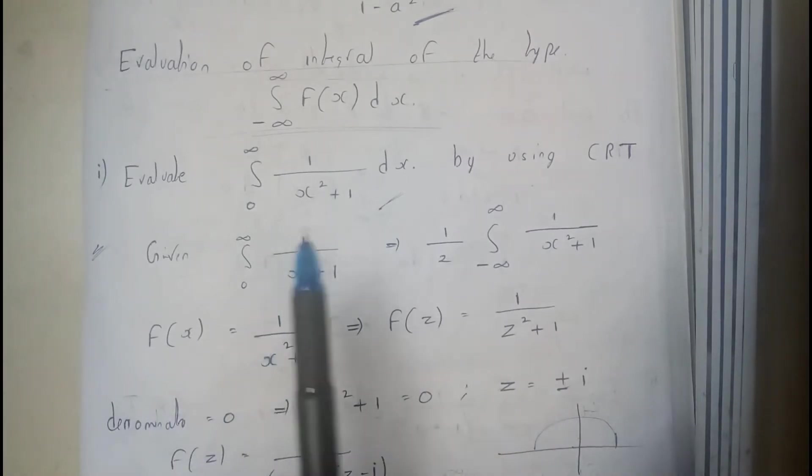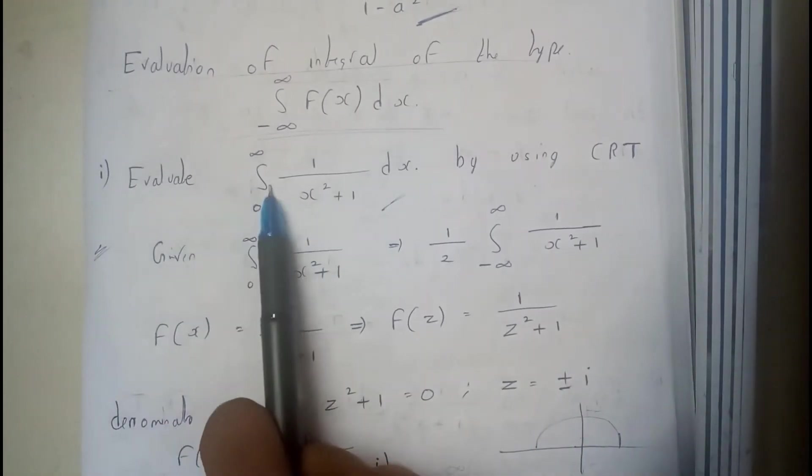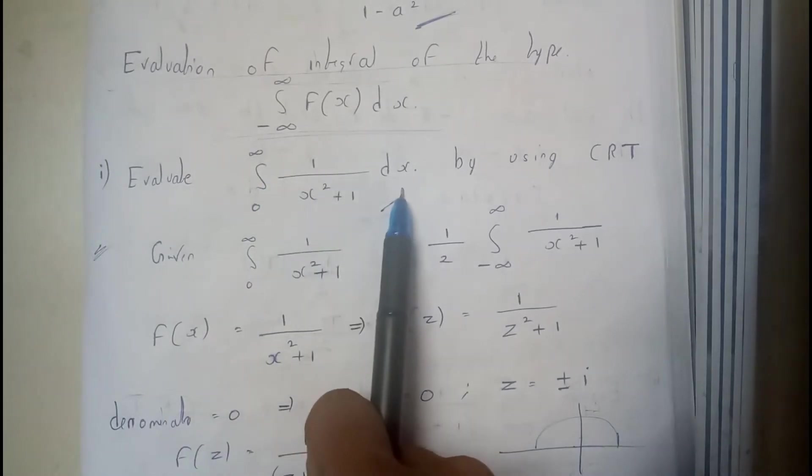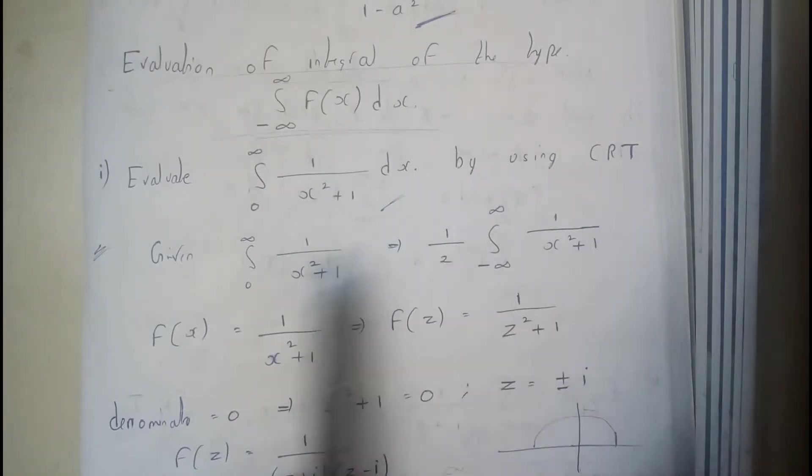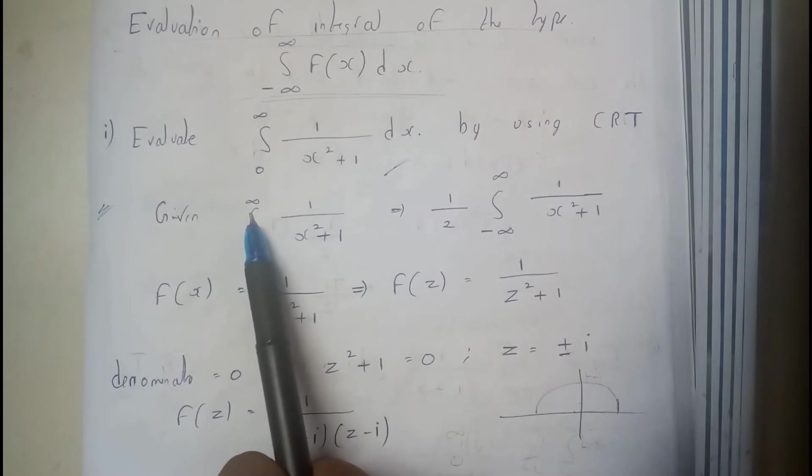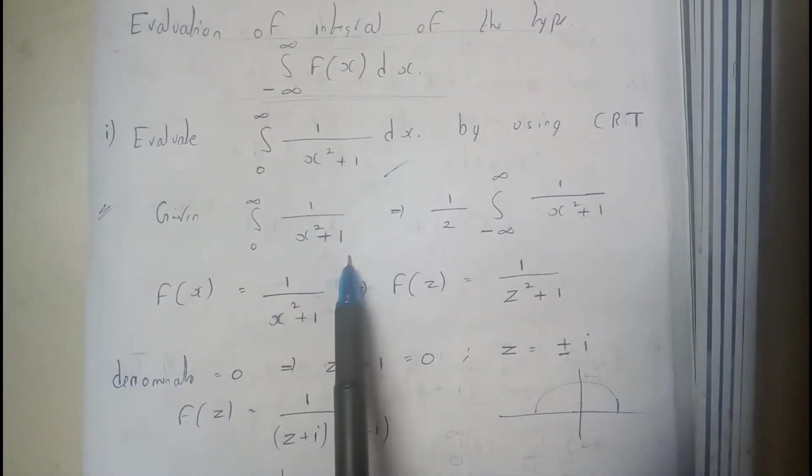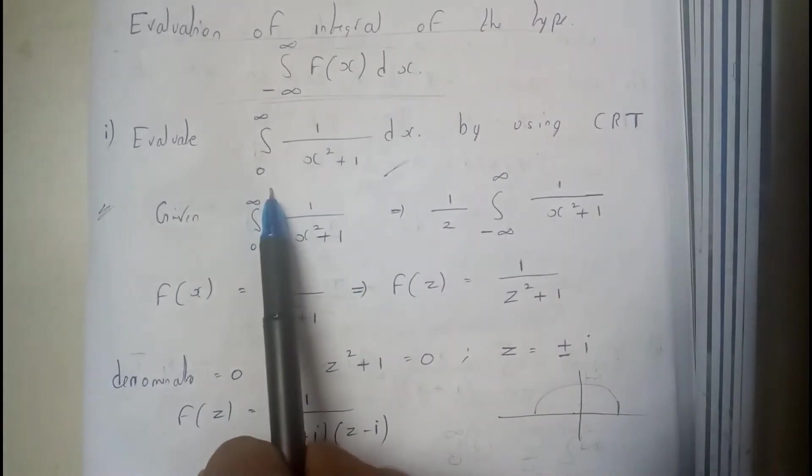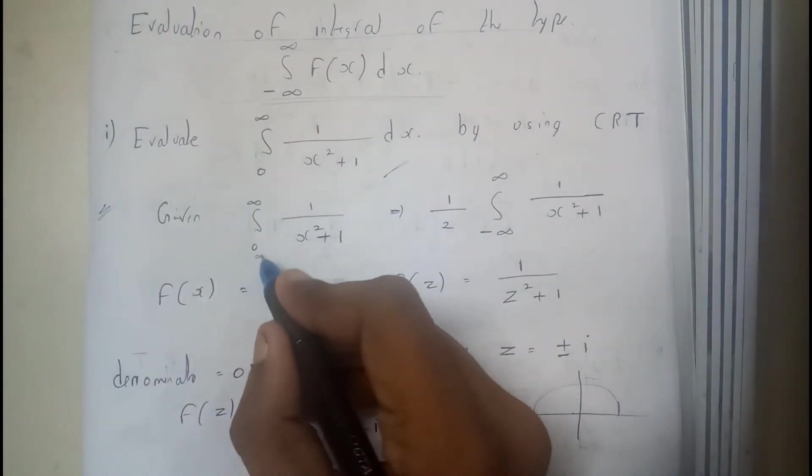Evaluate integral 0 to infinity 1 by x square plus 1 dx by using Cauchy's Residue Theorem. So given integral 0 to infinity 1 by x square plus 1. So basically we need minus infinity to infinity. So here halfway is missing right.